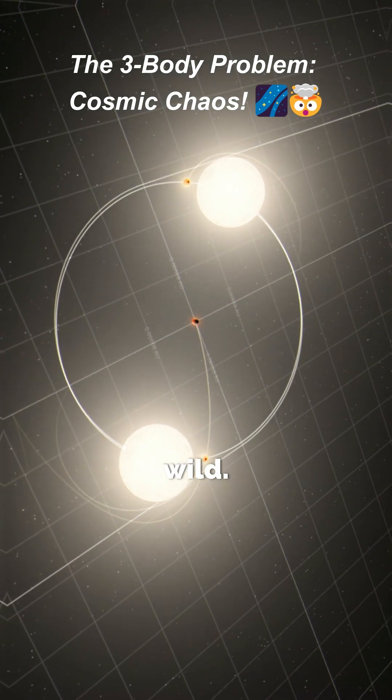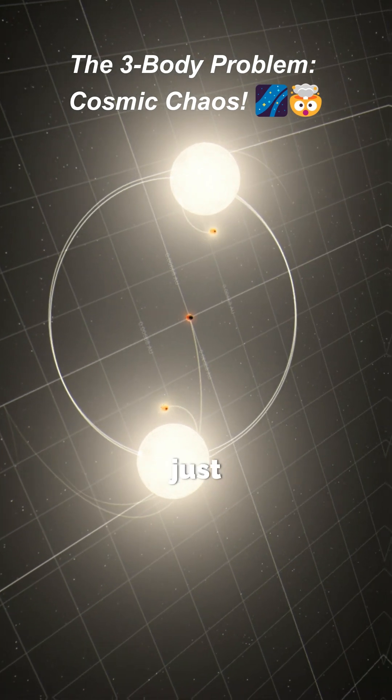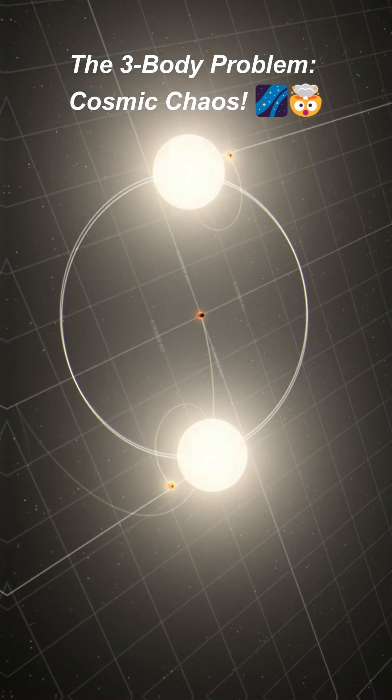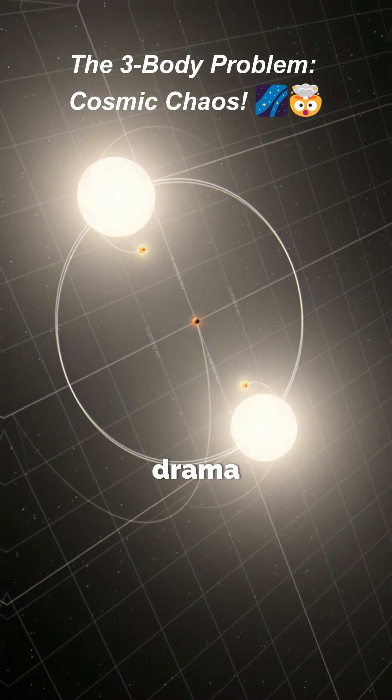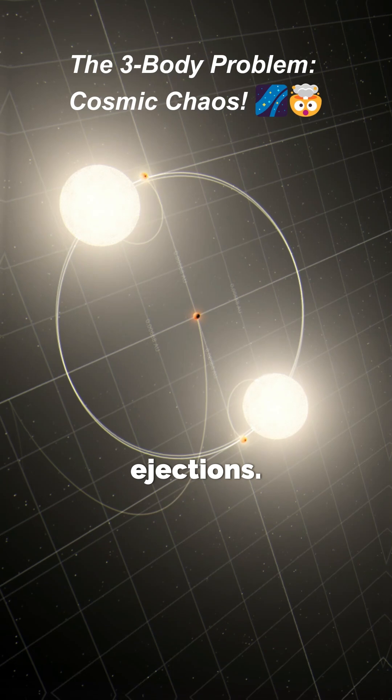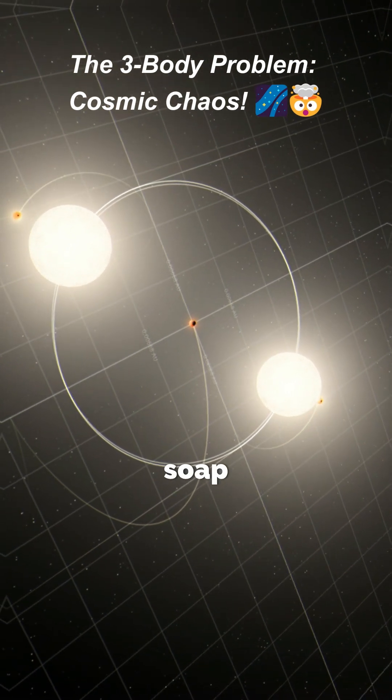And here's where it gets wild. The three-body problem isn't just theoretical, it's real. Triple star systems exist out there, and their unpredictable gravitational drama could lead to collisions or ejections. It's like the universe's own soap opera.